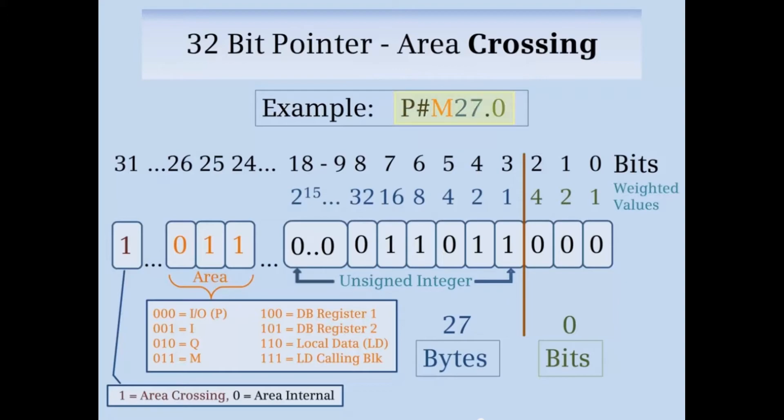Consider the example P#M27.0. The bit part of the address would contain all 0s. The byte part of the address would have a 1 in bits 7, 6, 4, and 3 whose weighted values sum to 27.